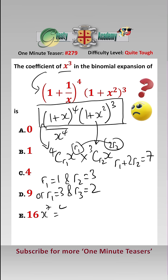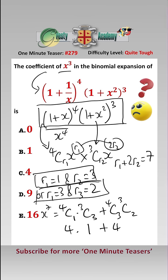The coefficient of x to the 7 is equal to 4c1 times 3c3—that's that top one there—add 4c3 times 3c2—that's the second one here. 4c1 is 4, 3c3 is 1, 4c3 is 4, and 3c2 is 3, which